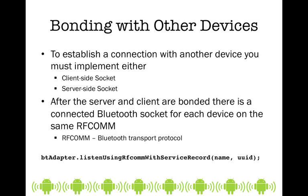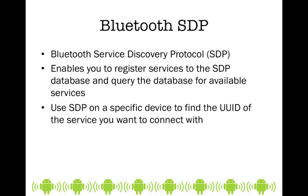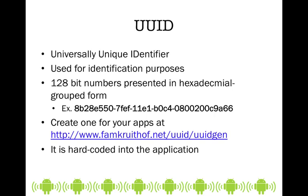Once the server and client are bonded, there is a connected Bluetooth socket for each device on the same RF comm. RF comm is radio frequency communication, and that is our Bluetooth transport protocol. We're going to be listening for that communication and provide it with a name and a universal user ID. The Bluetooth SDP, or Bluetooth service discovery protocol, allows us to register services to a database to find out what services are available, and we use the device universal user ID for the device we want to connect with.